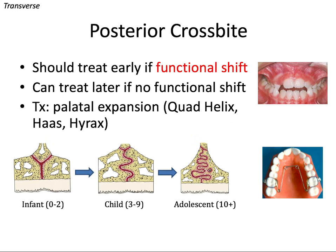In the transverse dimension, we can have a posterior crossbite. This is typically due to a maxillary transverse deficiency, also known as a narrow maxilla, and we talked about what this looks like in our diagnosis and treatment planning video. I'm going to classify each of these problems into one of those five Ackermann-Prophet categories — this one is of course transverse.